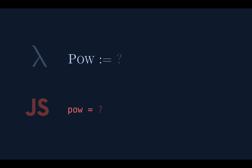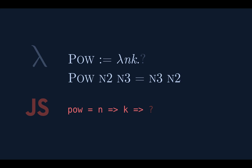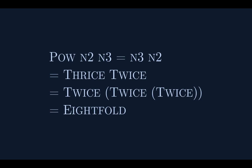What about exponentiation? Two to the third power is eight. What's multiplication in the lambda calculus? Composition. So two to the third is a three-fold composition of n2. How do we express that using church numerals? A church numeral does the n-fold composition of anything — that's just n3 of n2. But that means a power just takes n and k and flips them around — this is the Thrush combinator. Thrice of twice is twice of twice of twice, which is eight-fold. Beautiful.